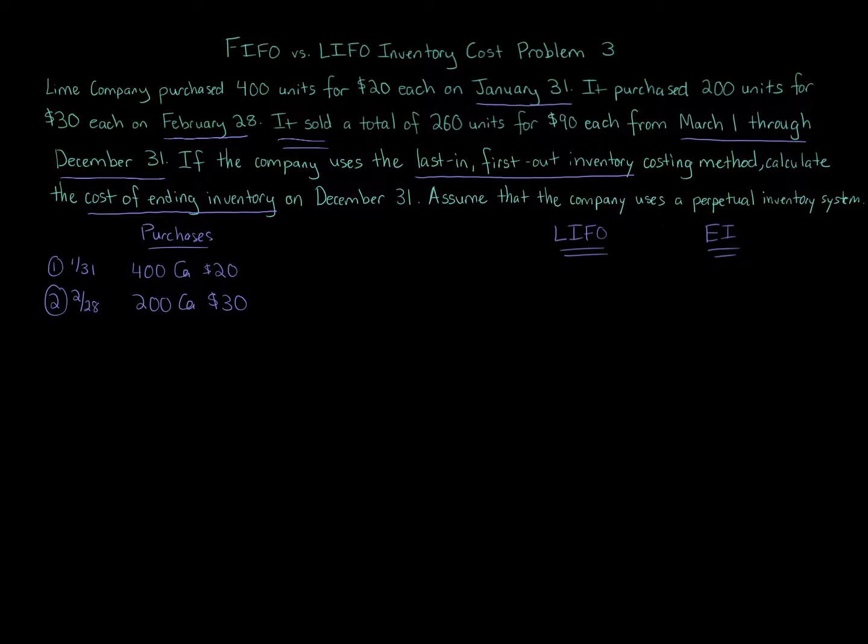All right. It sold a total of 260 units at $90 each. Do we care about the price it was sold for? No, that is the revenue. We care about the costs of items. We care about the $20. We care about the $30. We care about those amounts, the historic cost principle in accounting, what you actually acquired it for. Okay. So we sell 260 units at $90 each. Again, we don't care about the $90.